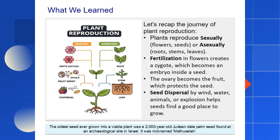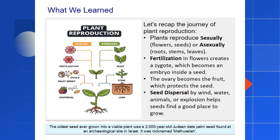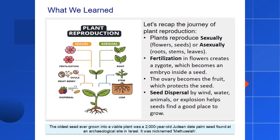So let's quickly review what we've learned today about the incredible ways plants reproduce. Plants have two main strategies: sexual reproduction, which involves flowers and the fusion of gametes to create a genetically unique seed; and asexual reproduction, or vegetative propagation, which creates an exact clone from a parent plant's root, stem, or leaf. In sexual reproduction, fertilization leads to the development of an embryo within a seed, while the flower's ovary matures into a fruit to protect it. Finally, we explored the crucial step of seed dispersal, where plants use wind, water, animals, and even explosive force to spread their seeds far and wide, ensuring the survival of their species. And for one final amazing fact, the record for the oldest seed ever germinated belongs to a Judean date palm seed — about 2,000 years old when archaeologists found it — and scientists were able to successfully sprout it into a new tree. That's one patient seed.